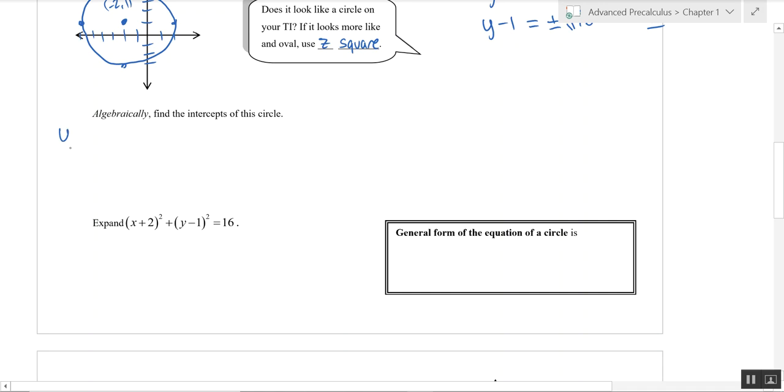To find the Y-intercept, we're going to let X equal zero. And so that gives us zero plus two squared plus Y minus one squared is equal to 16. And we're simply going to solve for Y here. I've got four on the left side, I'm going to subtract four. I've got Y minus one squared is equal to 12.